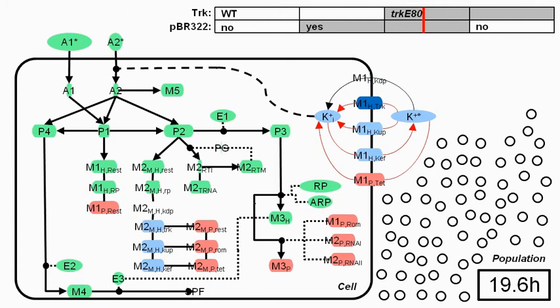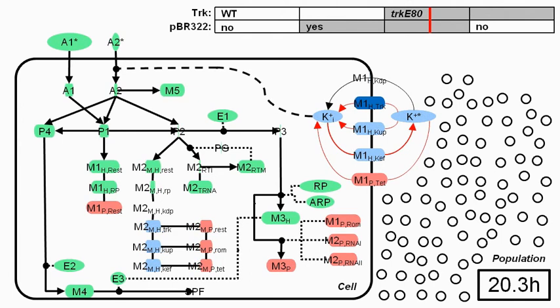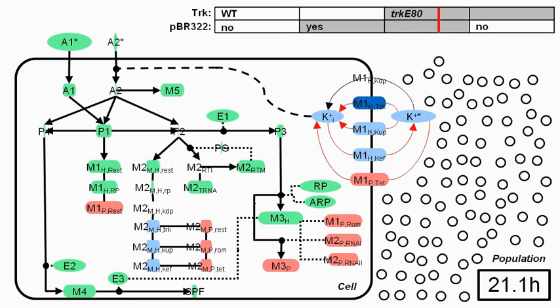This reduction in influx and efflux, and corresponding reduction in energy consumption, increases the growth rate of the mutant. This increase is slight and not clearly visible in the animation.